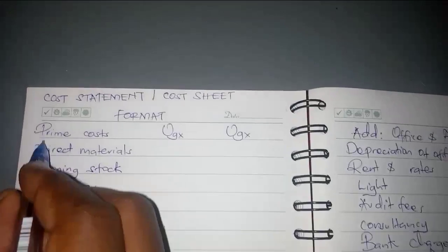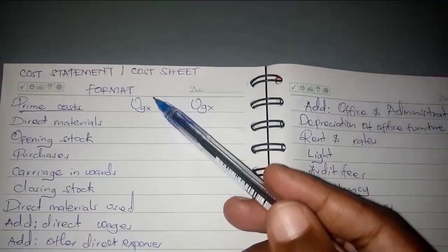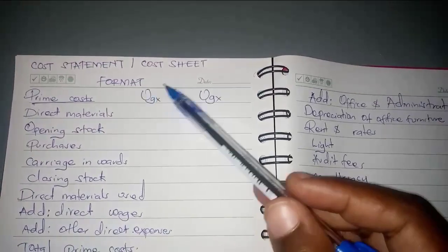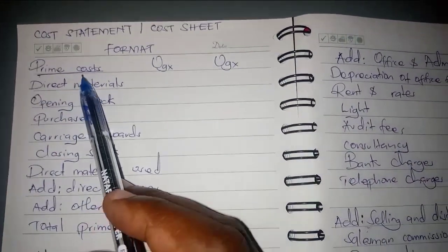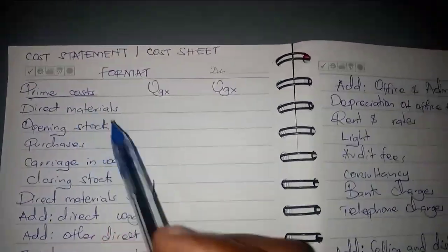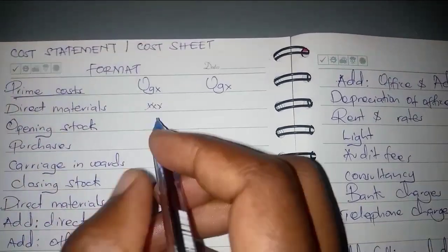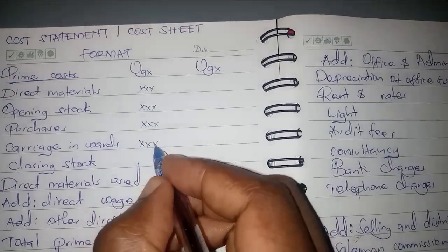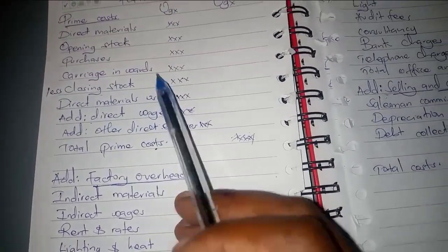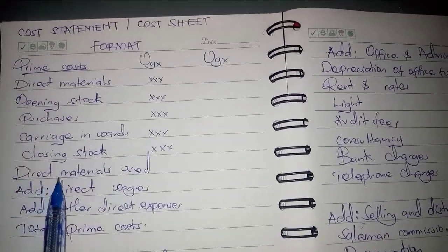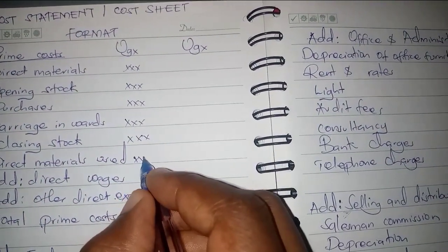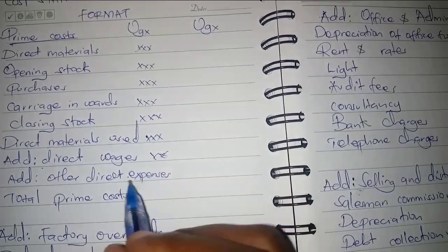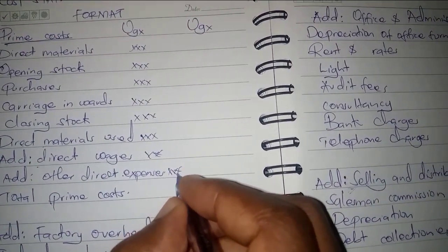The first section is prime costs. We have a column for UGX or dollars depending on the currency used in the question. The first item under prime costs is direct materials. Under that we have opening stock, purchases during the year, carriage inwards, then we less closing stock to arrive at direct materials used.